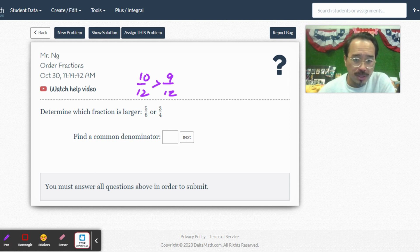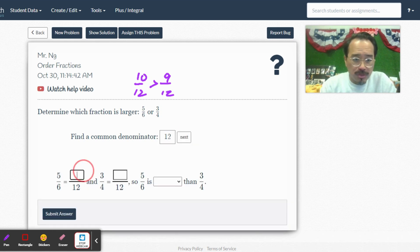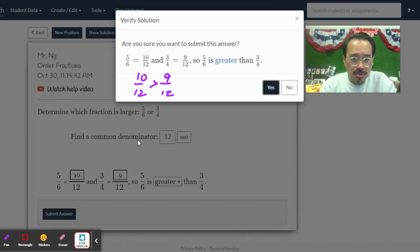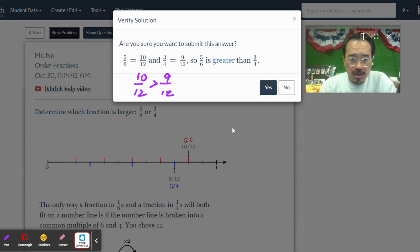So, let me put the answer in. Now, common denominator is 12. So, 6 times 2 is 12. 5 times 2 is 10. All right? So, it guides you, actually. It's not too difficult to do because it guides you each step of the way, which is good. It's good practice. Submit the answer.